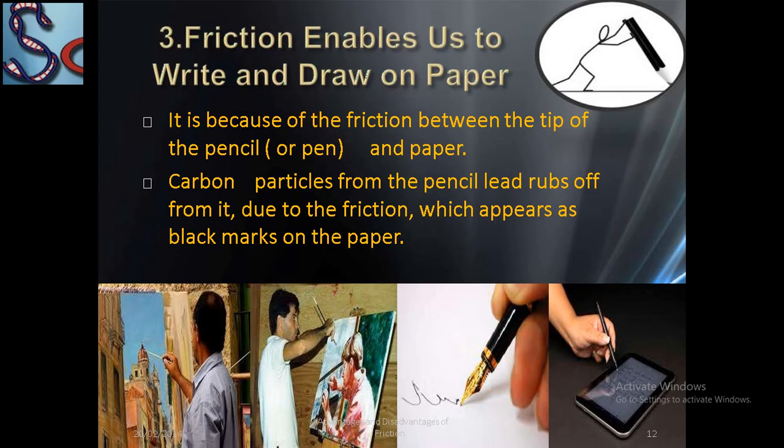Friction enables us to write and draw on paper. Because of the friction between the tip of the pencil and the paper, carbon particles from the pencil lead rub off due to friction, which appear as black marks on the paper. If there were no friction, we would be unable to write on the paper.